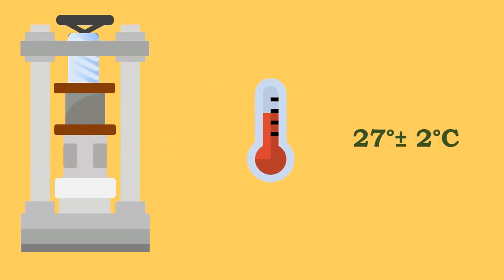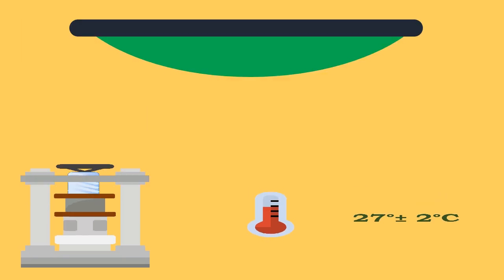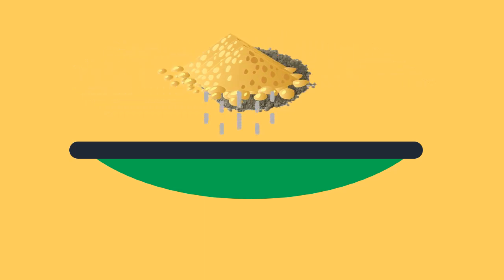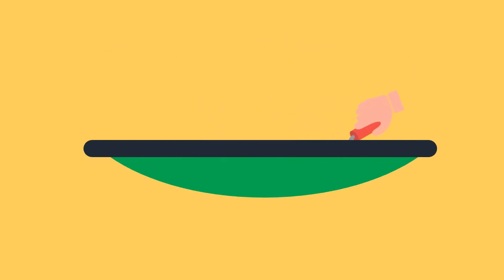The mixture of cement and standard sand in the proportion of 1:3 by weight is mixed dry with a trowel for one minute. Then add the water to form a standard consistency paste.